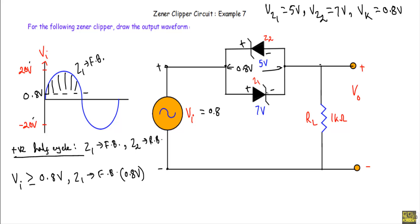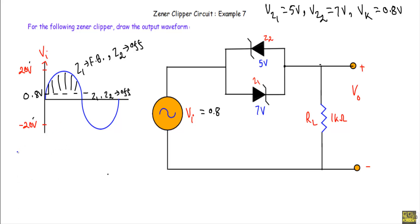Now, Z2 and Z1 are connected in parallel. Because of the 0.8 volt, Zener diode Z2 will never get sufficient voltage to operate in the Zener breakdown region. As a result, there will be no current flow through Z2 during this positive half cycle — Z2 will be in off state. When vi is less than 0.8 volt, we will not get sufficient voltage to put Z1 in forward bias, and Z2 will not conduct. So both Z1 and Z2 will be in off state. Now consider the negative half cycle.